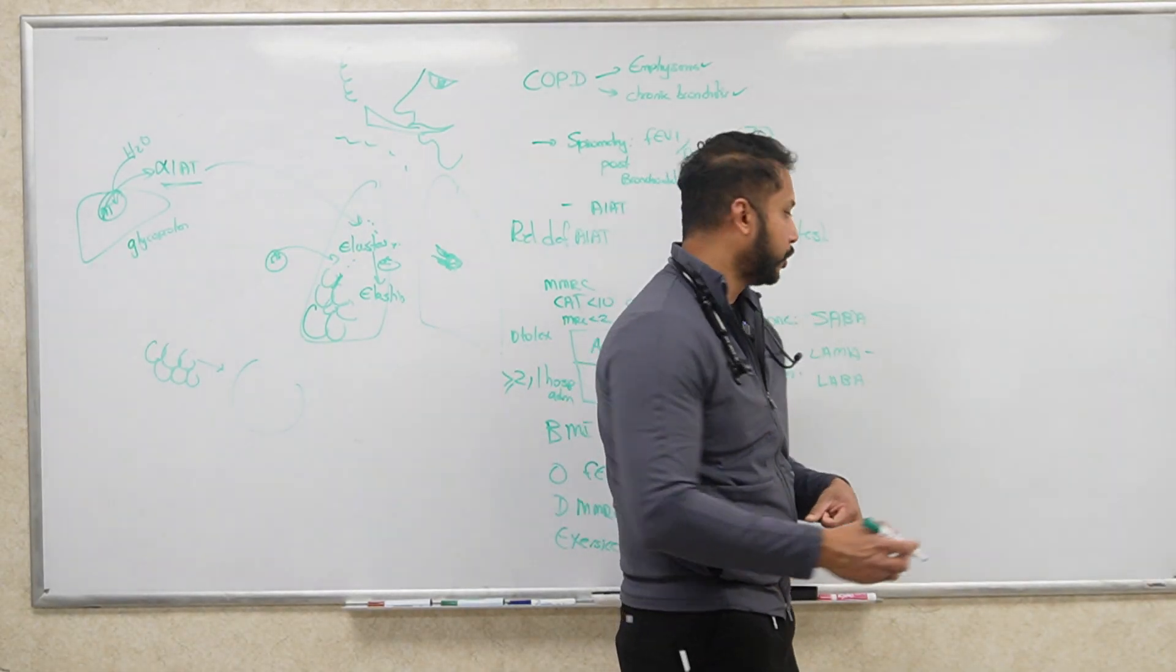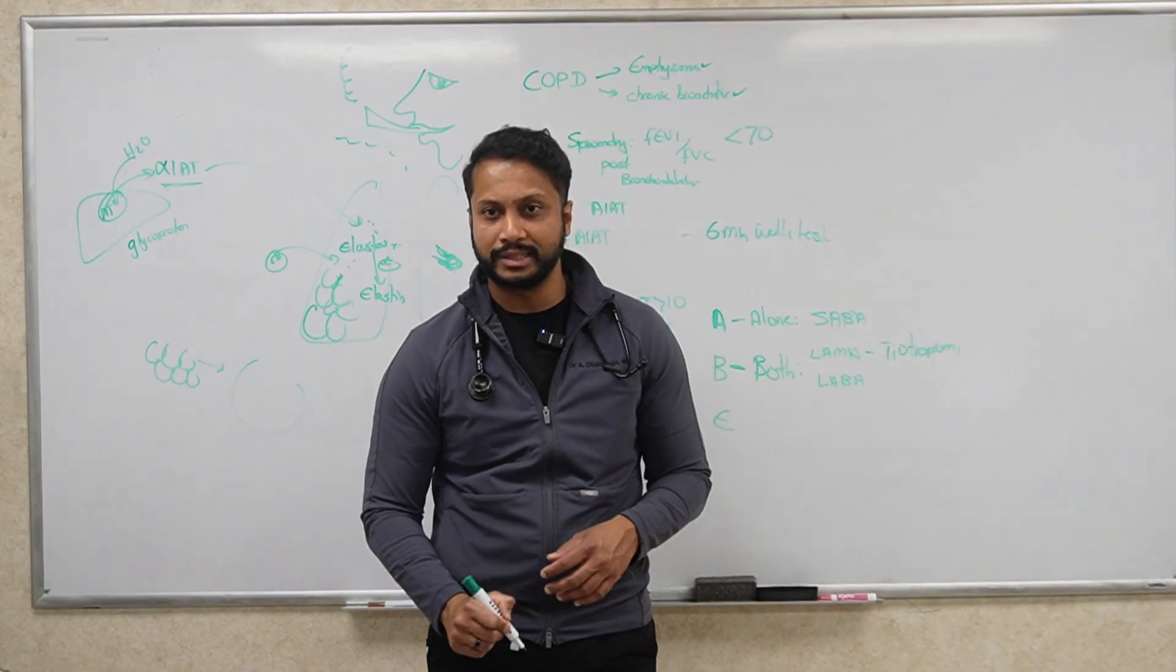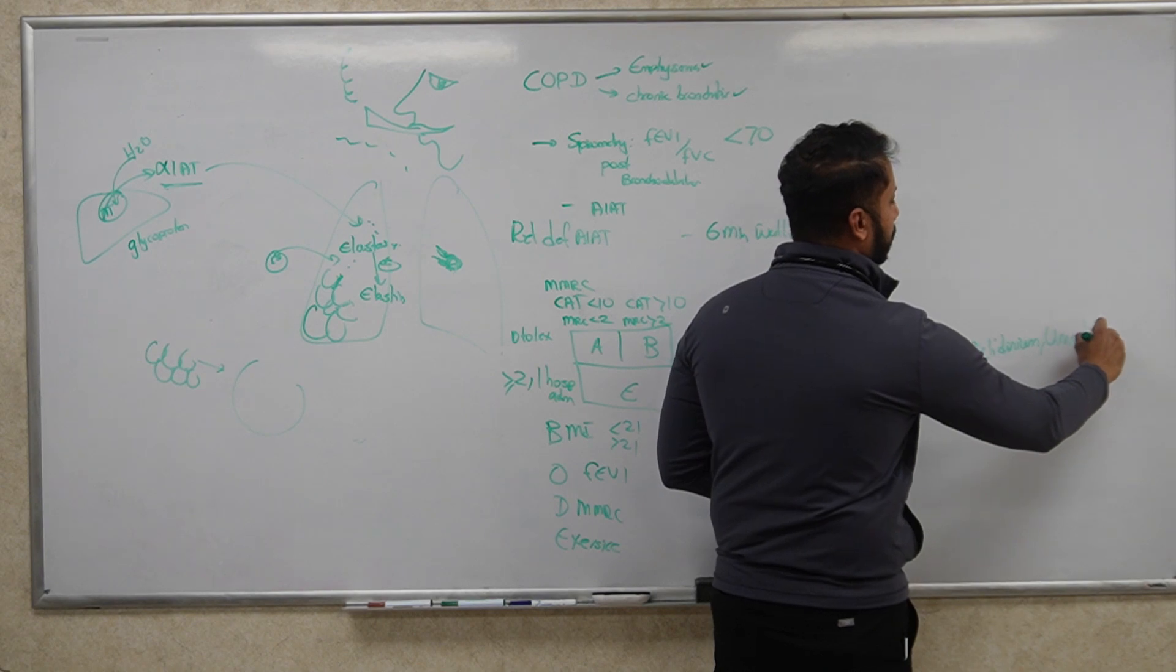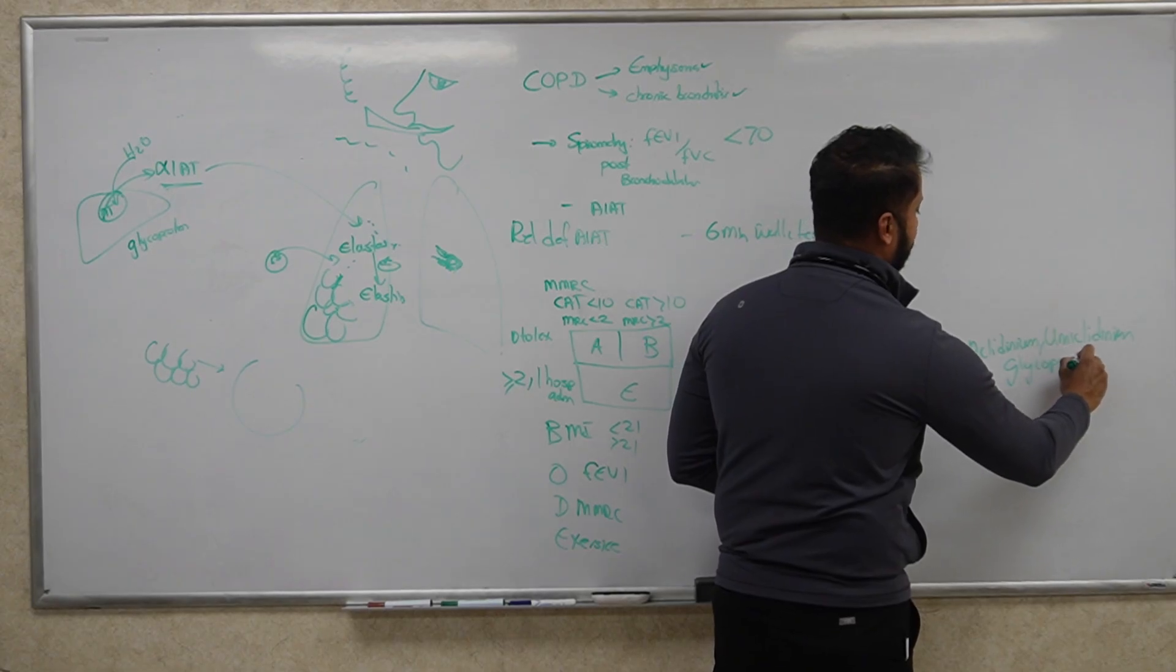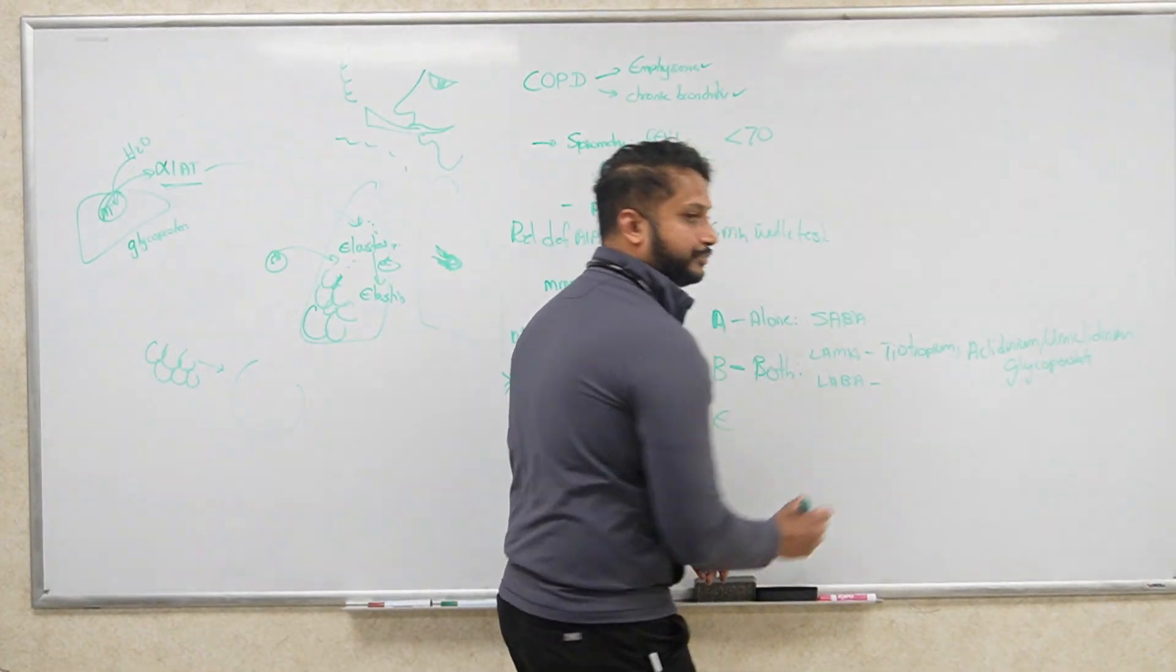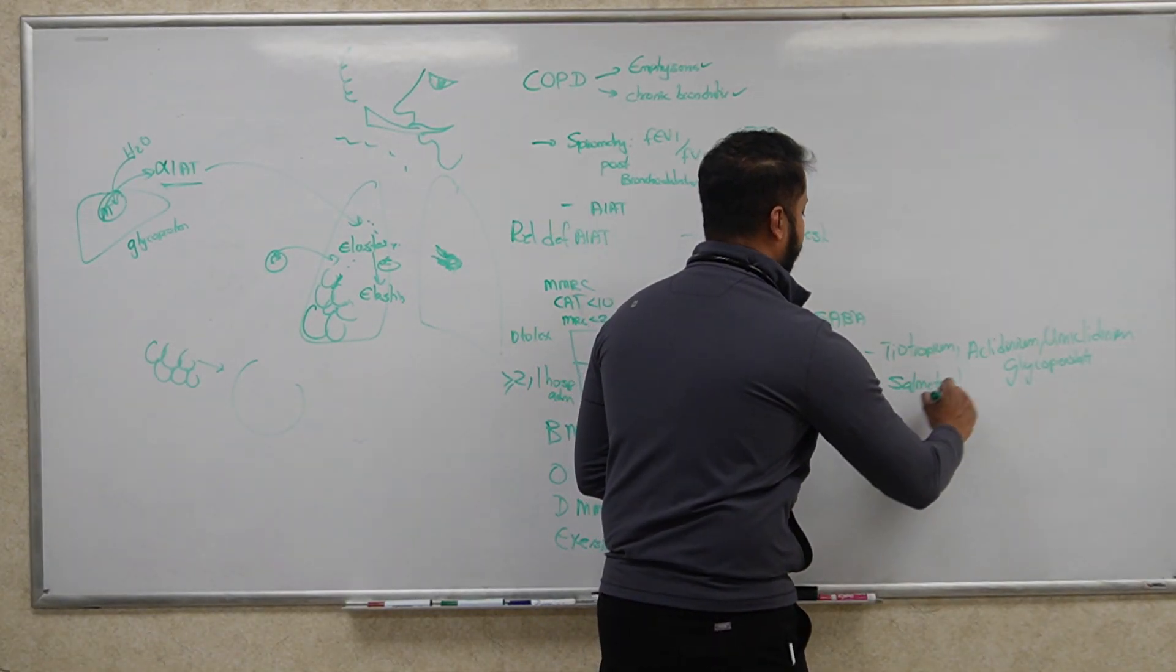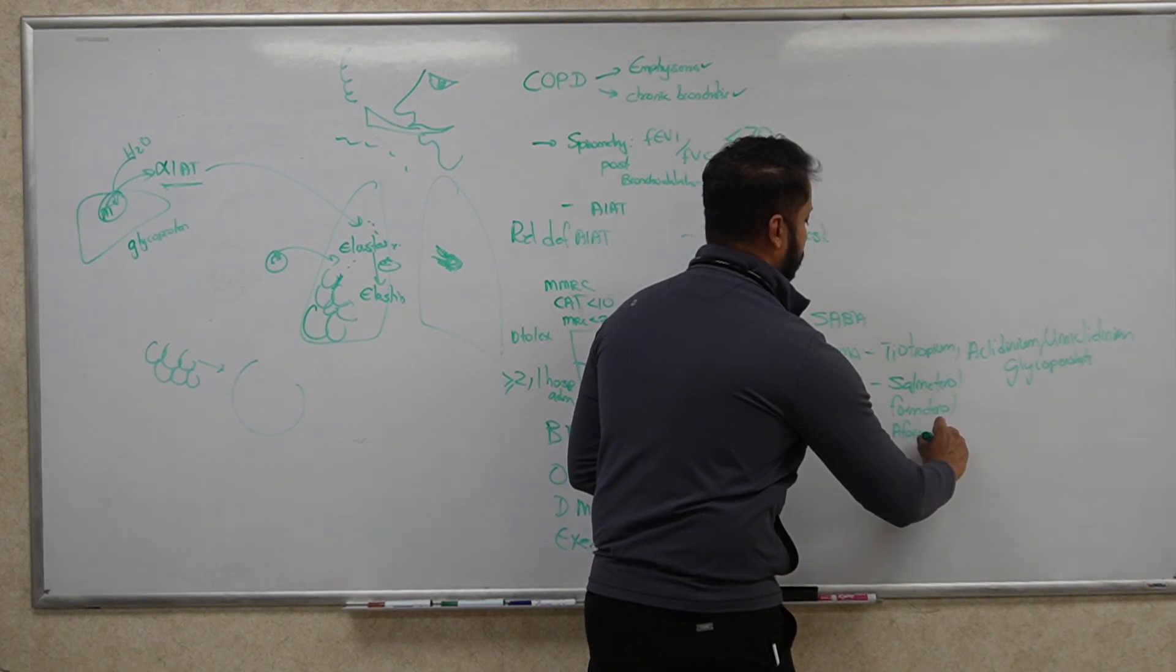You're going to combine a LAMA and a LABA. What are the LAMAs we know of? Ipratropium is your short-acting. Your long-acting is going to be tiotropium. What else do we know? There are newer drugs now: aclidinium, umeclidinium, and glycopyrronium.